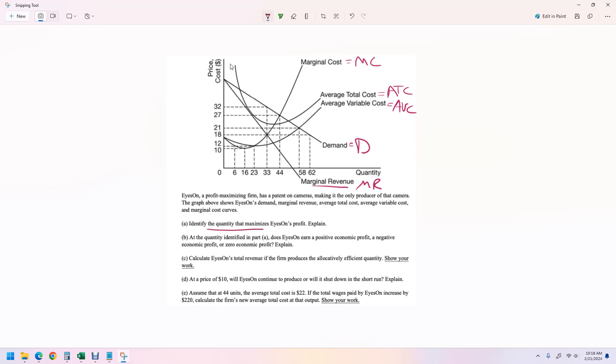Identify the quantity that maximizes their profit. This is a quantity where marginal revenue equals marginal cost. That gives us our profit maximizing quantity. You could start at marginal revenue and follow it down to where it hits marginal cost and stop there, or you could start at marginal cost and follow it up to where it hits marginal revenue. Either way, you get that answer, and that quantity is right here. It's 33.